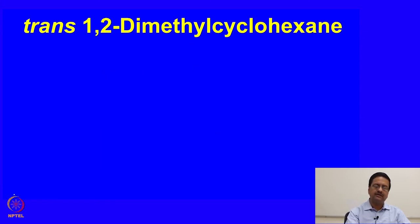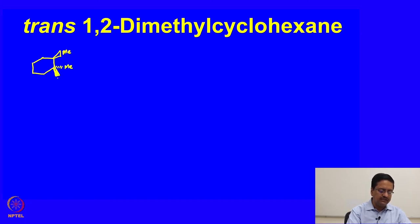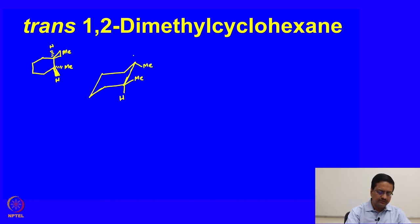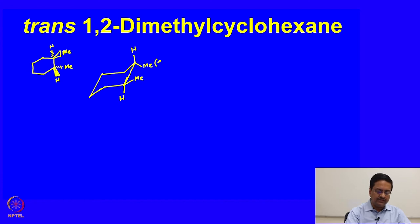Now, if we move to the trans isomer of 1,2-dimethylcyclohexane, let us draw it once again as a planar molecule. We write one methyl up and the other methyl down, with the hydrogen here up and the hydrogen there down. If we try to draw this trans-1,2-dimethylcyclohexane in the chair form, it would look like this — hydrogen down, methyl up on one carbon, and methyl down, hydrogen up on the adjacent carbon. This is trans-1,2-dimethylcyclohexane where one methyl is equatorial and this methyl is also in the equatorial position.